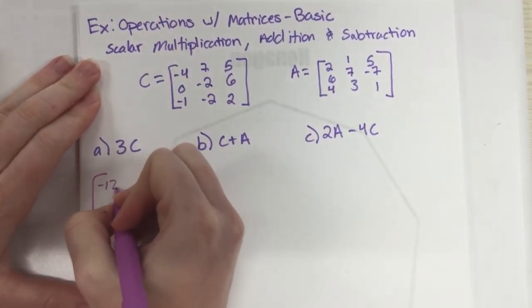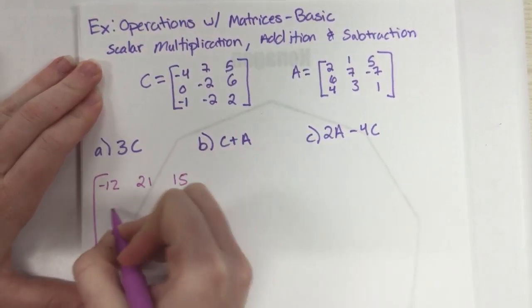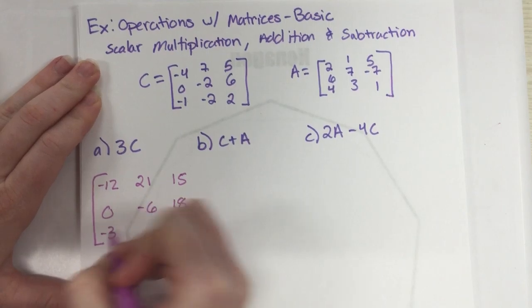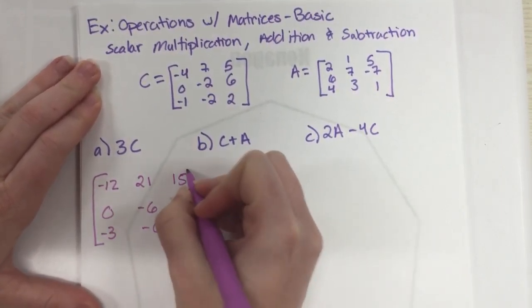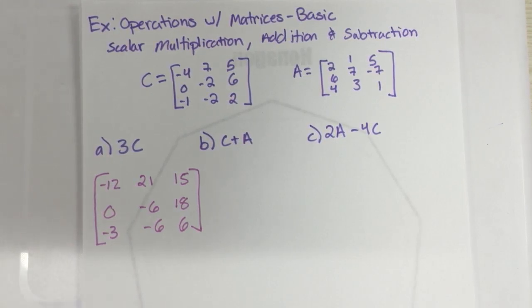Alright. 3 times negative 4, negative 12. 3 times 7, 21. 15. 0, negative 6, 18, negative 3, negative 6, positive 6. And you're done. That's all you got to do. So that's what scalar multiplication is.